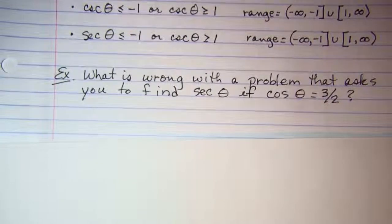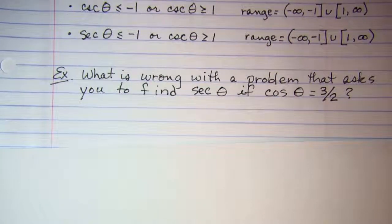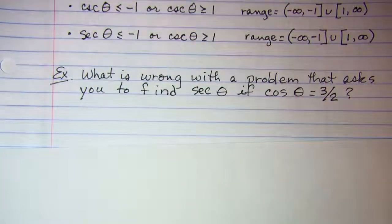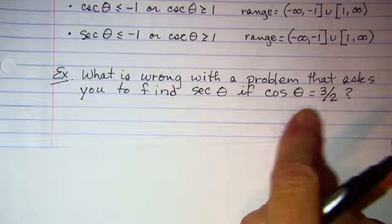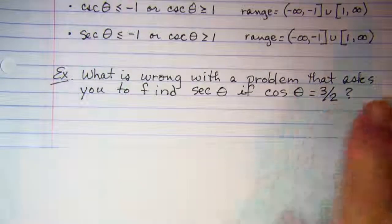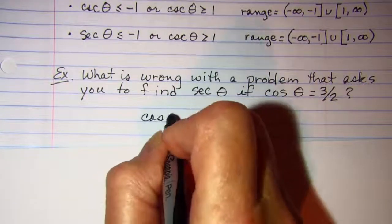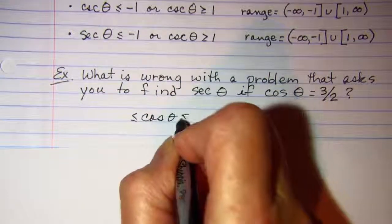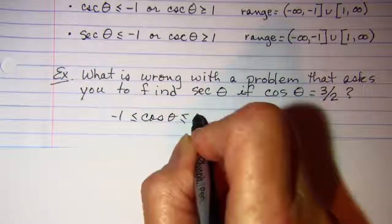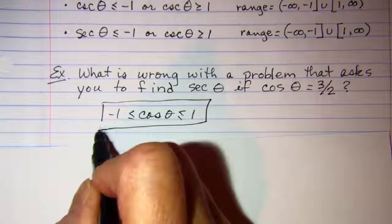What is wrong with a problem that asks you to find secant theta if we know that cosine theta is three halves? Well, sine and cosine both have to be between negative one and one, and three halves equals one and a half. So cosine theta is between negative one and one, so that's why that's impossible.